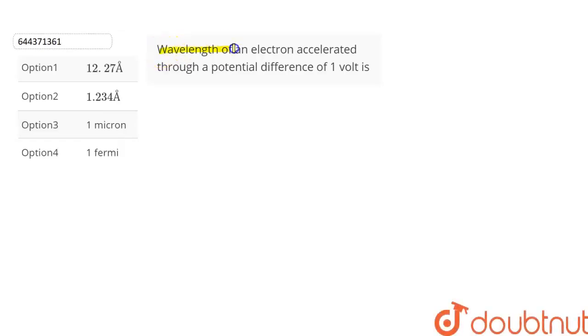The question is: the wavelength of an electron accelerated through a potential difference of 1 volt is, and we are given 4 options from which we have to choose the correct option. Let's find out.